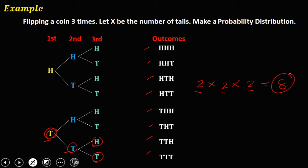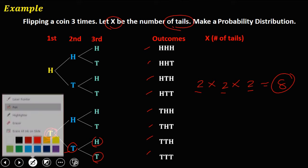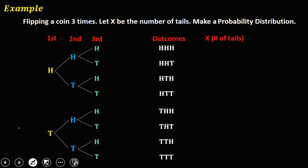Since we let our random variable X be the number of tails, we count the number of tails for every outcome. For the first outcome (all heads), there are no tails, so X = 0. The next outcomes give X = 1, 1, 2, 1, 2, 2, and 3 tails respectively. This is now our random variable.